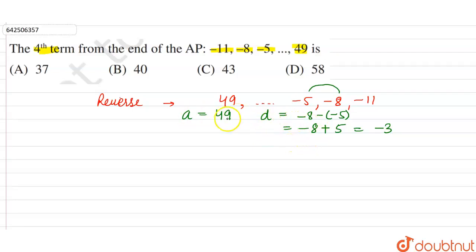So the first term is 49, the common difference is -3, and we have to calculate the fourth term from the end. Now after reversing, the fourth term from the end will be equal to the fourth term from the starting.